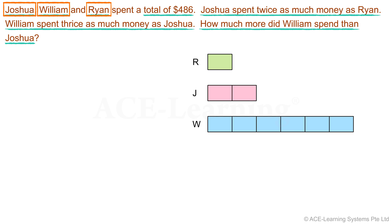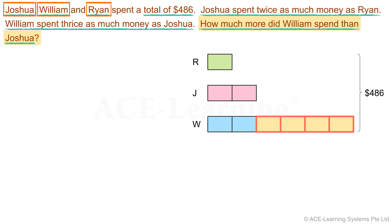Do we have more information to add to the model? The three of them spent a total of $486. We'll use a curly bracket here to represent the sum and indicate $486. Now what are we to find? It says: how much more money did William spend than Joshua? That would be this region — a difference of four units. In the model, we indicate the quantity we are to find with a question mark, so we place the question mark here.